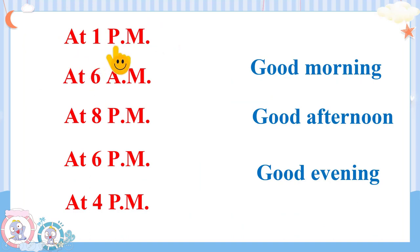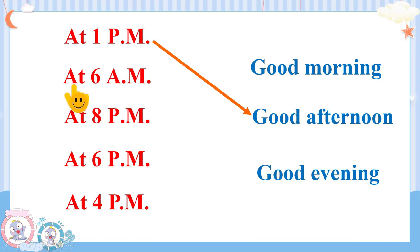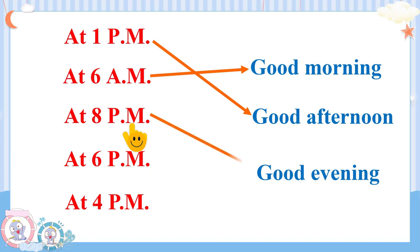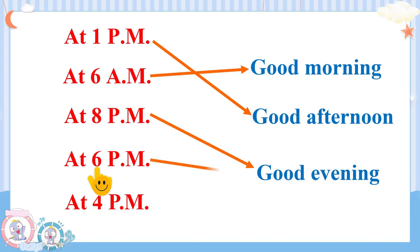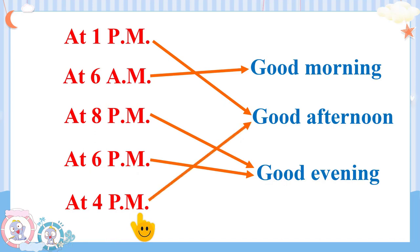At 1pm we say Good afternoon. At 6am we say Good morning. At 8pm we say Good evening. At 6pm we say Good evening. And at 4pm we say Good afternoon.